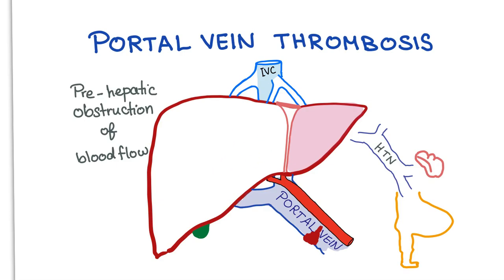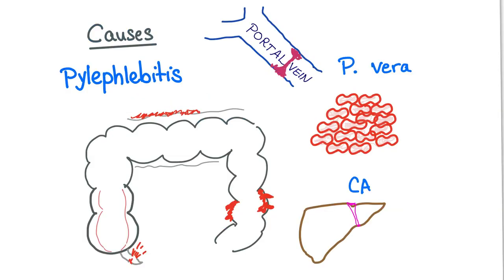In the previous video we classified pre-hepatic, intra-hepatic, and post-hepatic causes of obstruction of blood flow. So please go ahead and watch the previous video first discussing hepatic artery thrombosis. Let's get started.